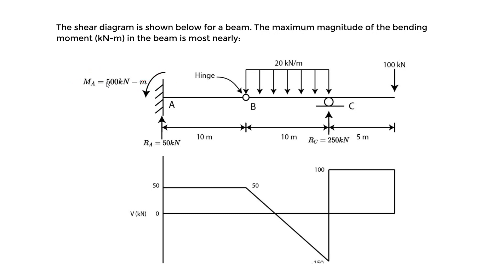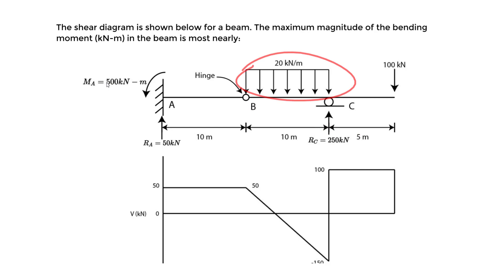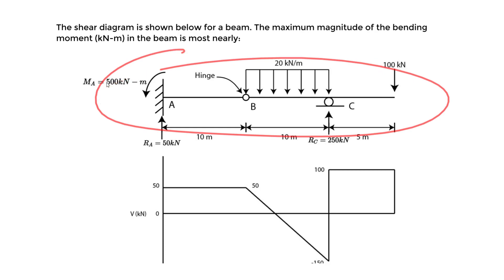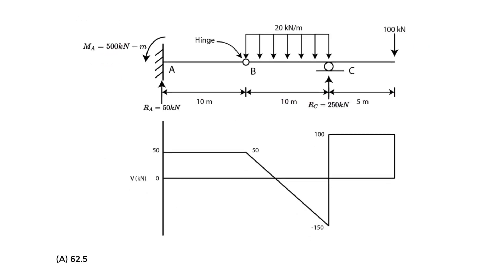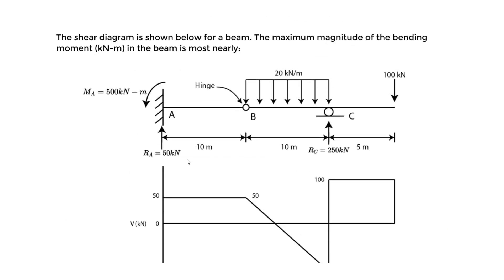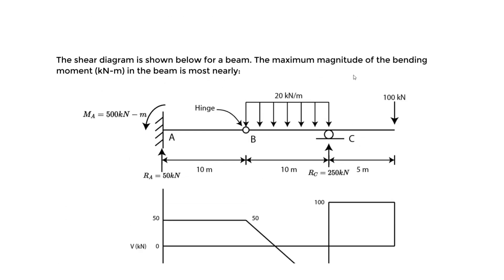We have a beam with given loading conditions. At A we have a reaction moment and a reaction force already solved. We have a reaction at C, a hinge, a distributed load, and a point load at the end of 100 kilonewtons. Based on this loading diagram, the shear diagram is given to us, and what we want to do is find the moment diagram, which will help us determine the maximum magnitude of the bending moment.